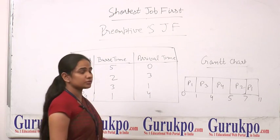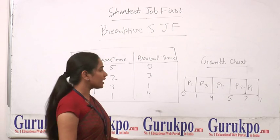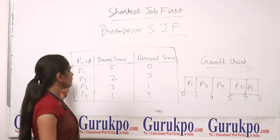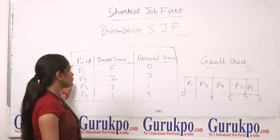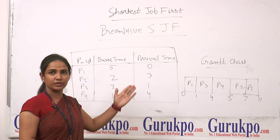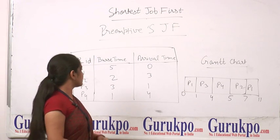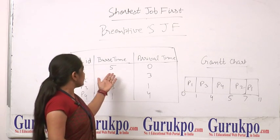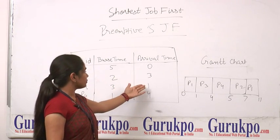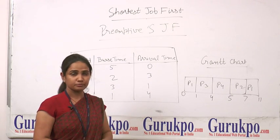Here we can see an example of preemptive Shortest Job First. We have four processes — P1, P2, P3, and P4 — with arrival times 0, 3, 1, and 4 respectively, and their respective burst times.